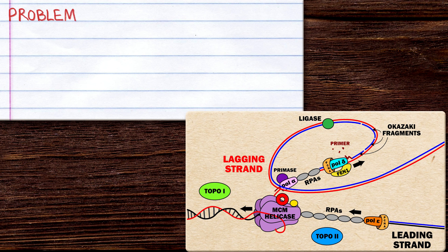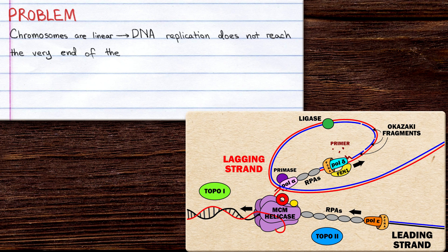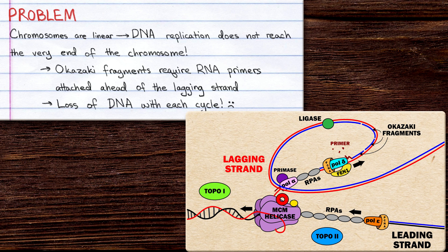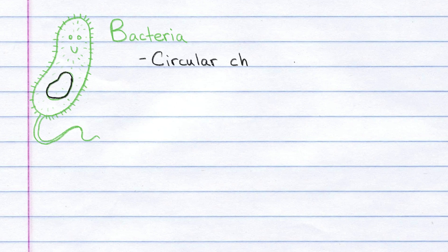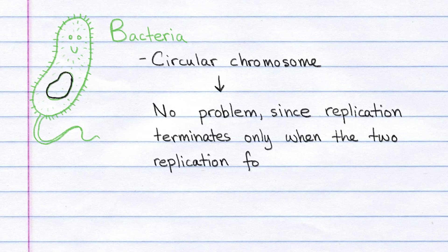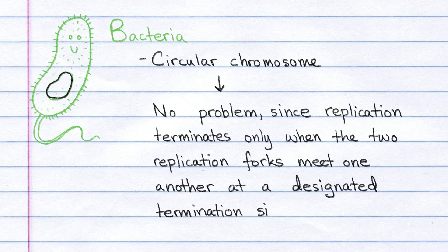However, there is a problem. Because the chromosomes are linear, DNA replication does not reach the very end of the chromosome, since Okazaki fragments require RNA primers attached ahead of the lagging strand. This results in the loss of DNA with each cycle. Bacteria with their circular chromosomes do not have this issue, since replication terminates only when the two replication forks meet at a designated termination site.